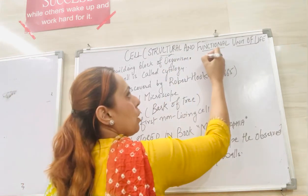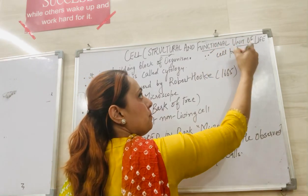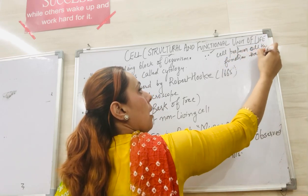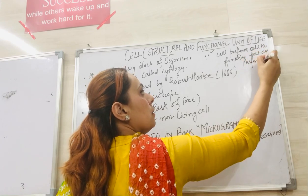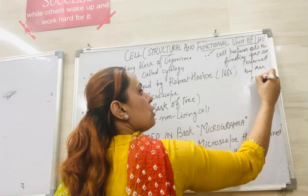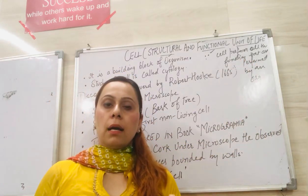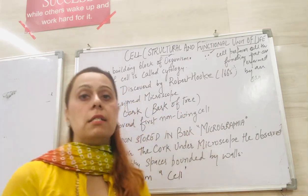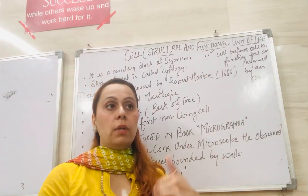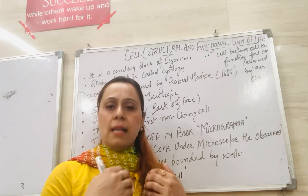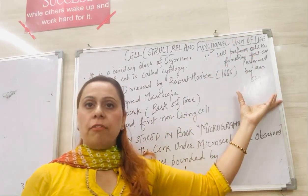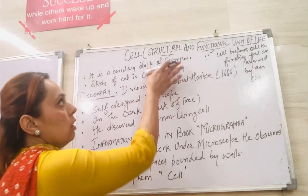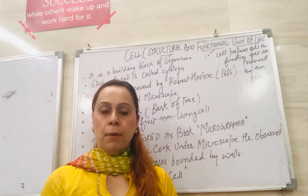We call it a functional unit of life because the cell performs all the functions. There are so many functions that a cell performs, and those functions are performed by them. That is why we call the cell a structural and functional unit of life.